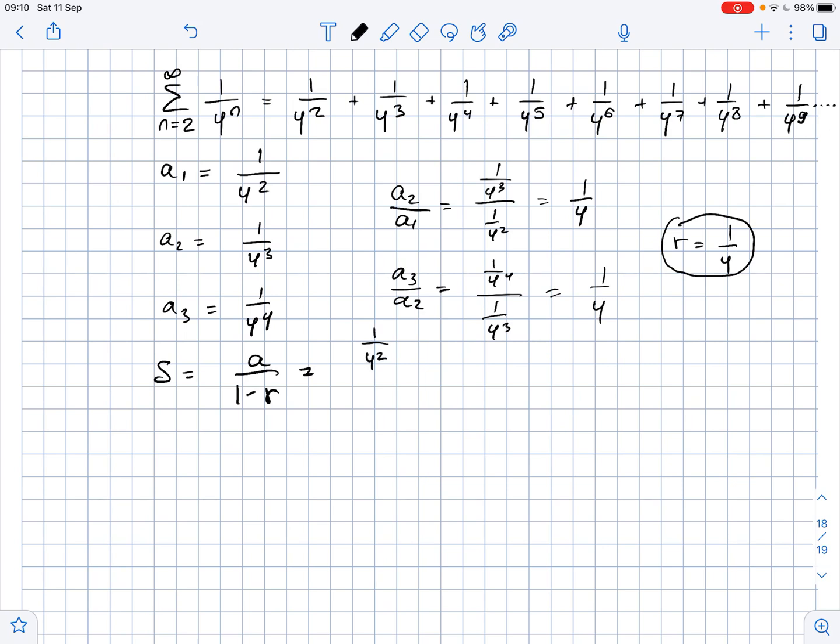Here the first term is 1 over 4 squared and the common ratio is 1 over 4. Then we get that this equals 1 over 16 times 4 over 3, and then this equals 1 over 12. So the sum of the given series equals 1 over 12.